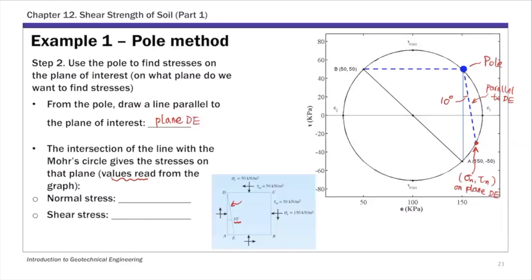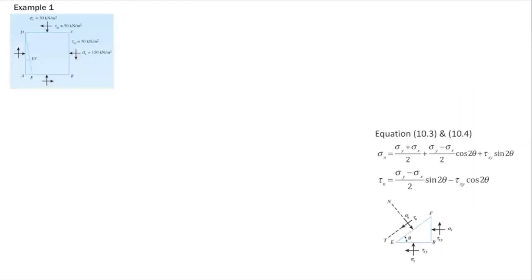For this example, the normal stress on plane dE is approximately 164 kPa and the shear stress is negative 30 kPa. That's how you get the normal and shear stresses on plane dE. Although not asked, you can equivalently use equations 10.3 and 10.4 to find sigma n and tau n on plane dE.